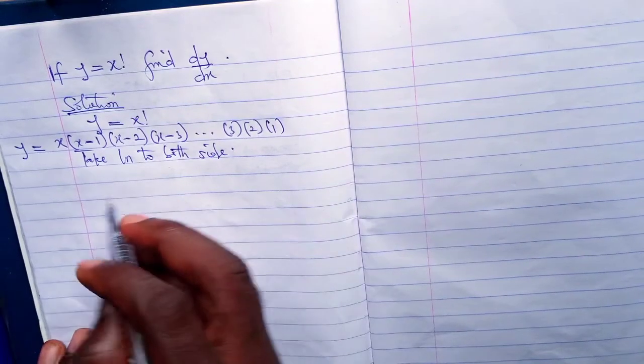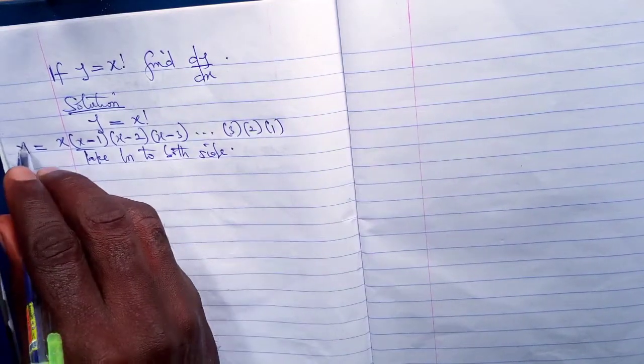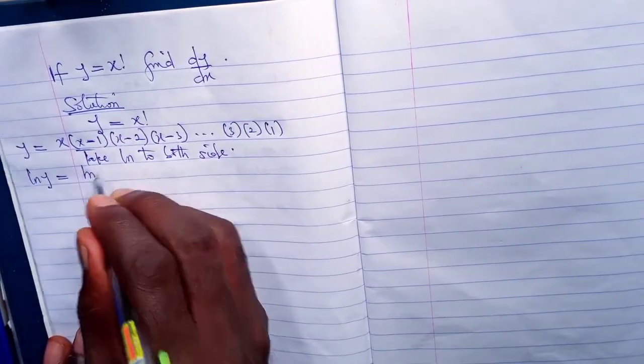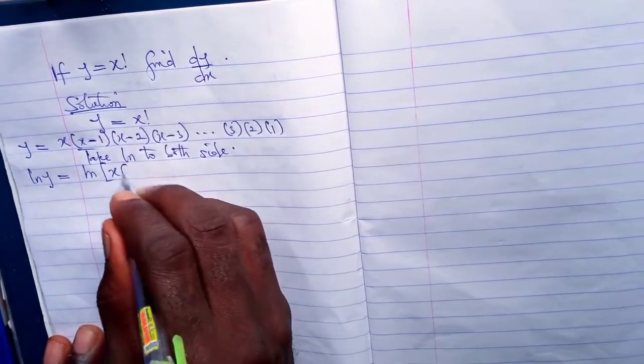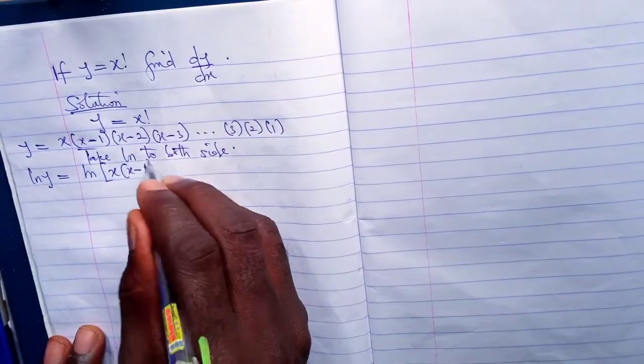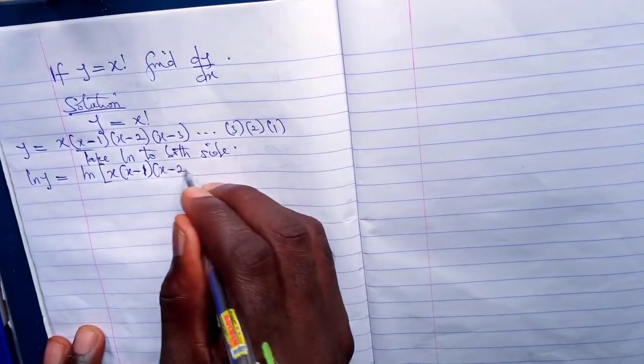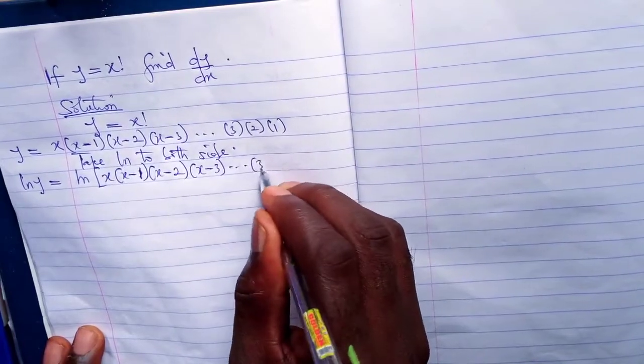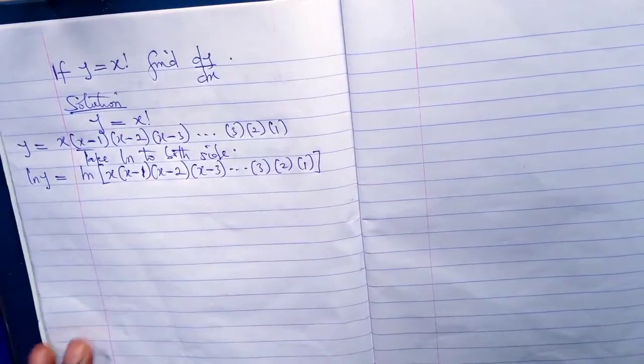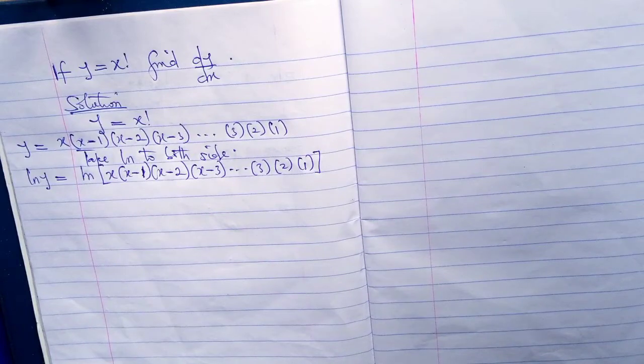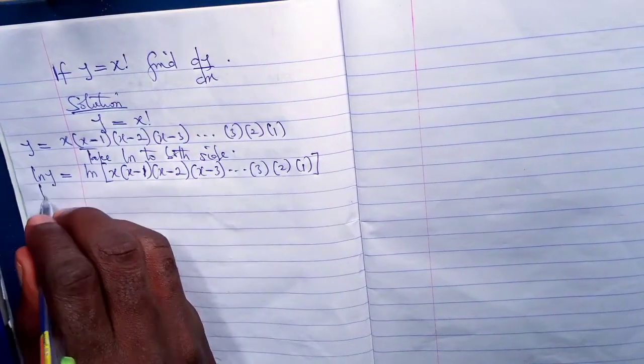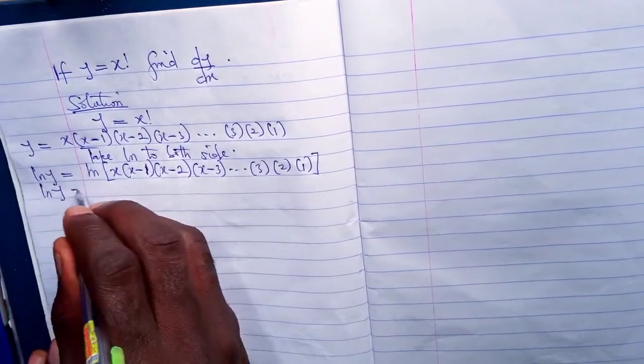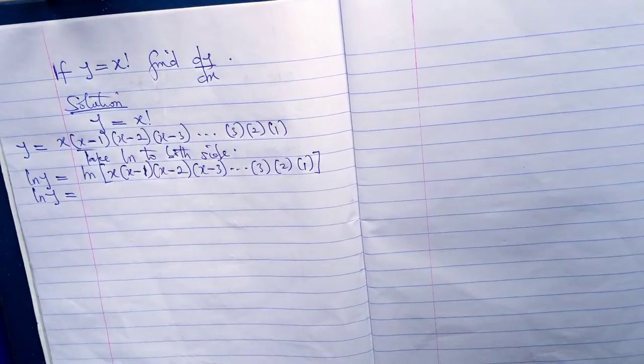Here we have ln y equals the ln of x into x minus 1, x minus 2, x minus 3, dot dot dot 3, 2, 1. We still continue: ln y is equal to, since this is natural logarithm form.